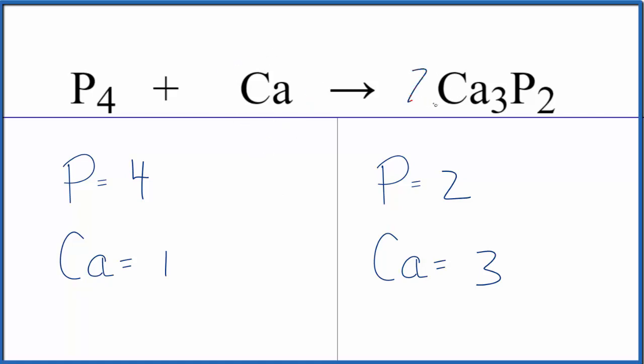If we put a two here, two times two, that would give us four phosphorus atoms. So those are balanced.